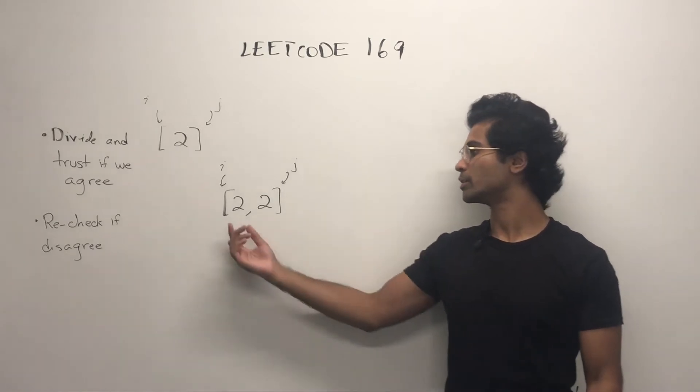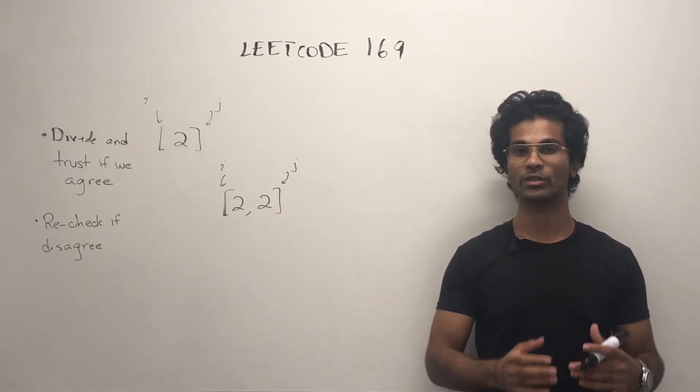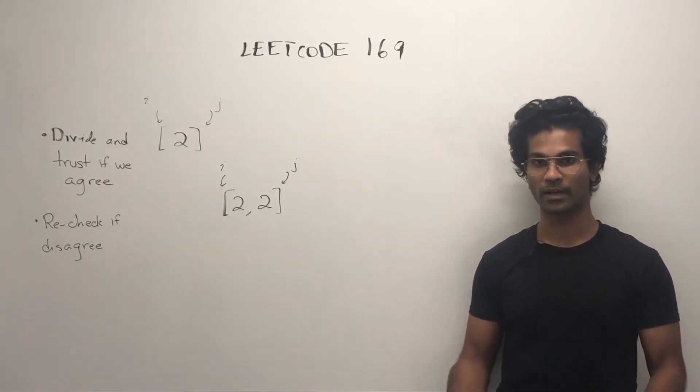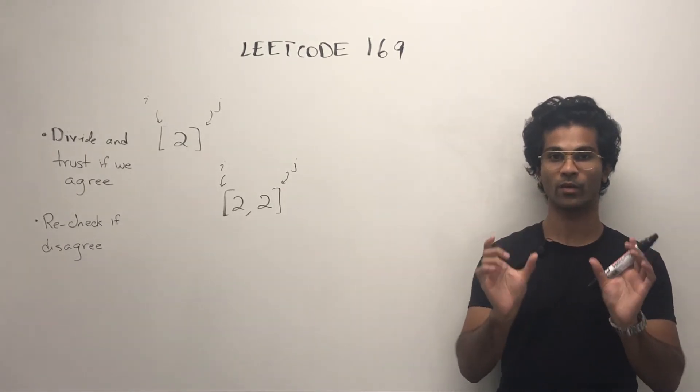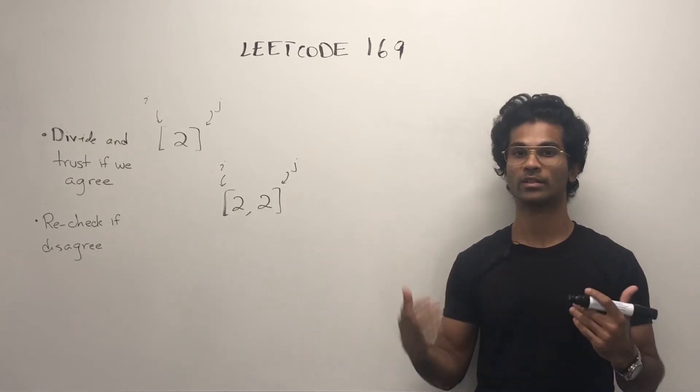What if this was our input? What if we had a two comma two? Our pointers are i and j again on the left and right side. In this example, we split it in half, and both the left and right subarrays boil down to the base case.